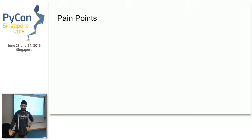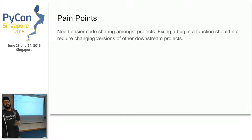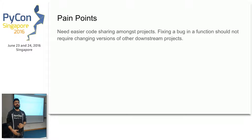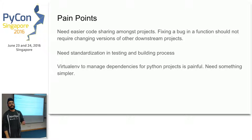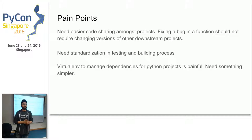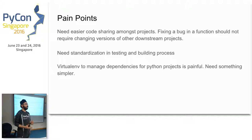In summary, we need a system that allows easier code sharing amongst multiple projects. Fixing a bug in a function should not require changing versions of other downstream projects. We need standardization in the testing and building process. In Python, virtual environments manage dependencies of a single project easily, but if you have tens or twenties of projects in your repository, managing all those virtual environments becomes painful. We need some way to automate the building of virtual environments — that's where PANTS steps in.